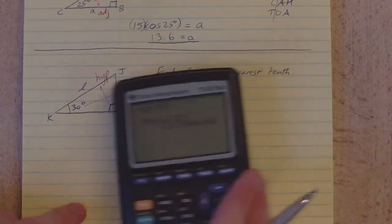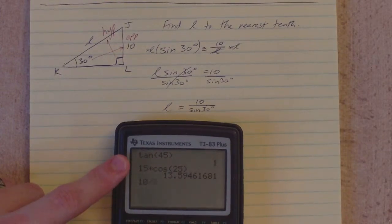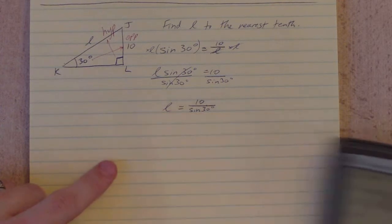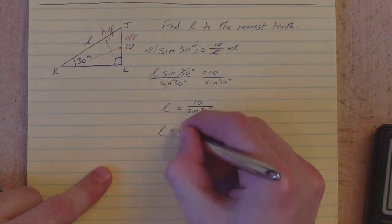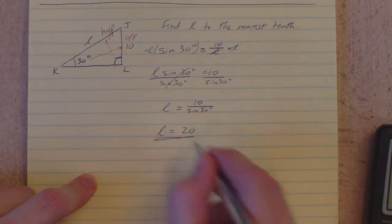So we grab our calculator. And we have that L is 10 divided by the sine of 30 degrees, which gives us 20. We don't even need to go to the nearest tenth because it's just a nice even 20 there. We're done.